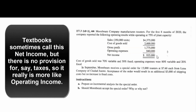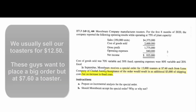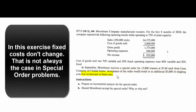A new customer from Mexico says they'd like to place a big order — 15,000 toasters — but they only want to pay $7.60 each. If we do that, we're also going to have to incur an extra $3,000 in shipping costs. Our fixed costs aren't going to change, because fixed costs generally don't change in relation to new sales. We have to figure out: is this the right thing for us to do?